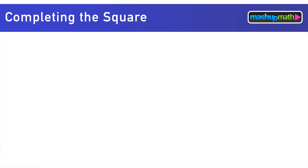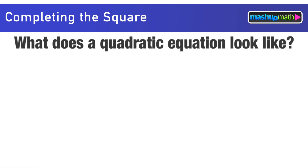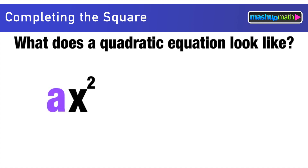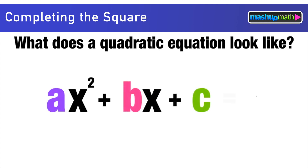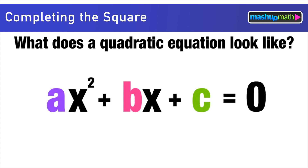Hello again everyone and welcome to this lesson on completing the square. We'll start with the question: what does a quadratic equation look like? We're used to seeing quadratics with an ax² term plus a bx term plus a c term, all equal to zero.